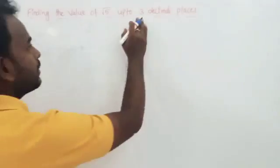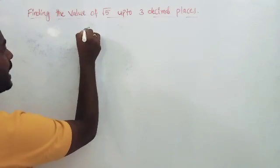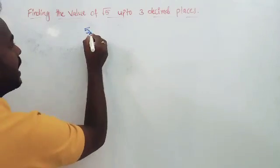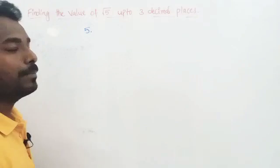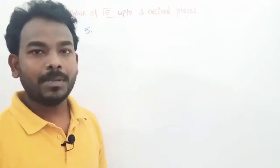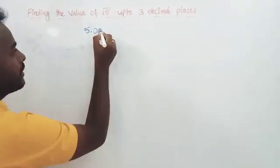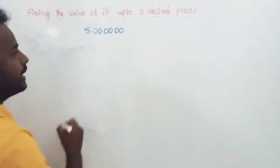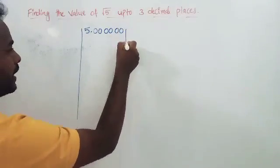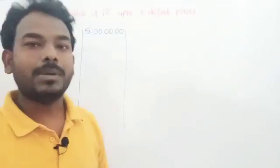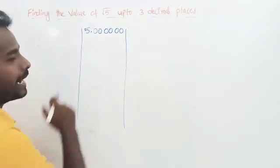To find this value, you need to write 5 as it is, then keep the decimal point, and since we want three decimal places we need to keep three pairs of zeros — that is six zeros after the decimal point. Next, draw a vertical line as we do in normal division: take this total as the dividend and write the quotient at the top.